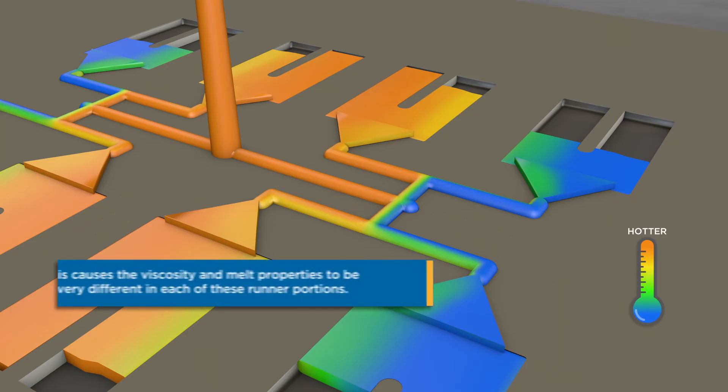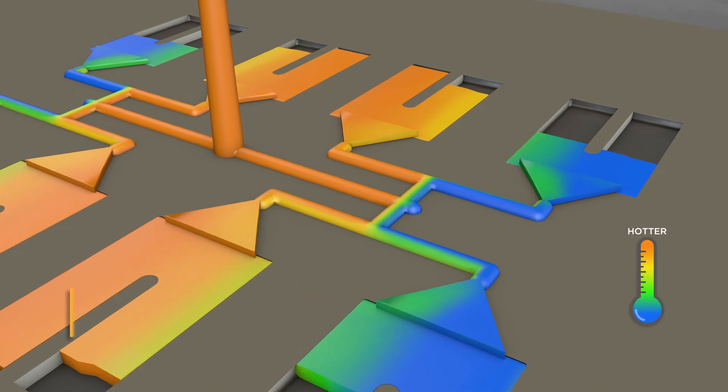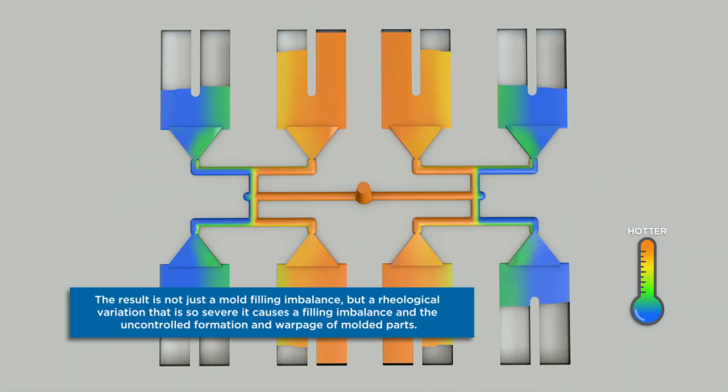This imbalance continues to get worse and worse at each and every runner intersection thereafter, which leads to cavities filling at different rates with different pressures and different temperatures. This rheological variation will result in the uncontrollable deformation and warpage of molded parts.